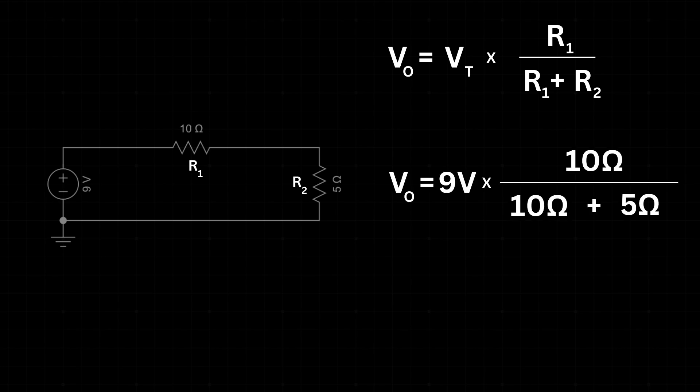If we plug in the numbers, the total voltage is 9 volts for the battery. R1 is 10 ohms. The total resistance is 10 ohms plus 5 ohms, or 15 ohms. The output voltage across R1 is 6 volts.